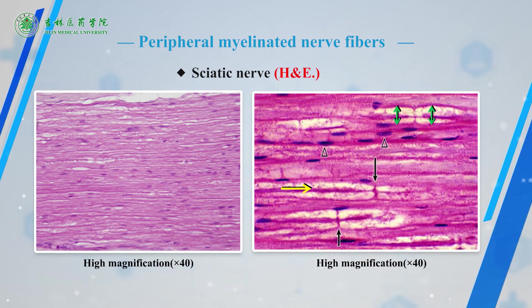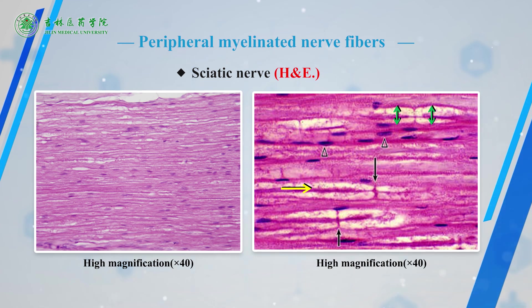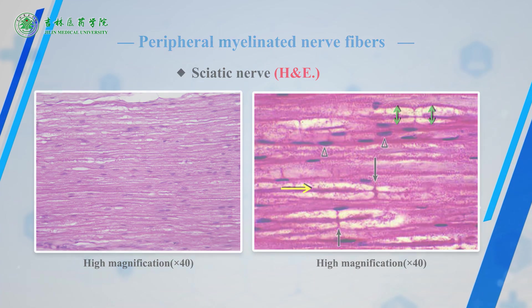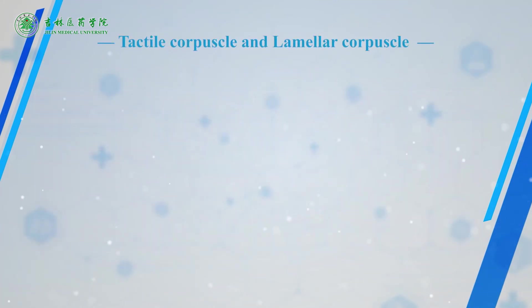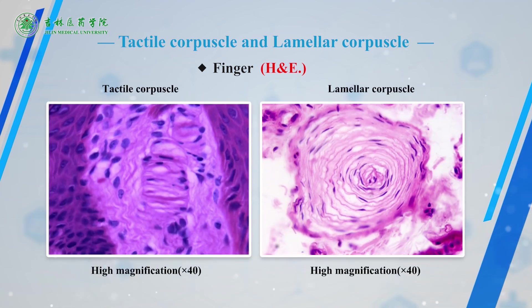The fibroblast nuclei are flatter and stain more deeply. The distance between two nodes is called the internode of myelin and consists of only one Schwann cell. The fifth slide is tactile capsule and lamellar capsule.